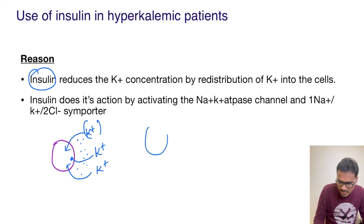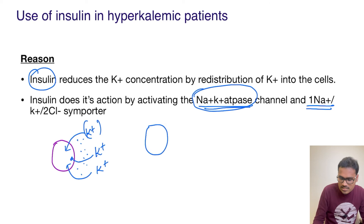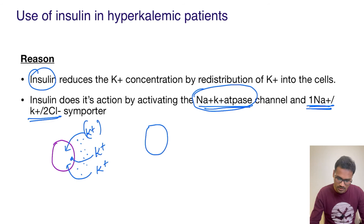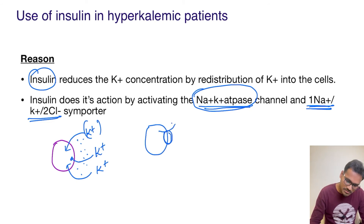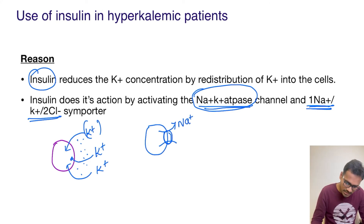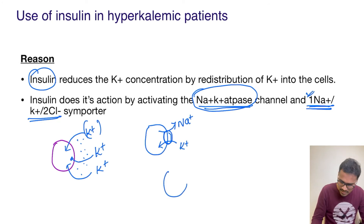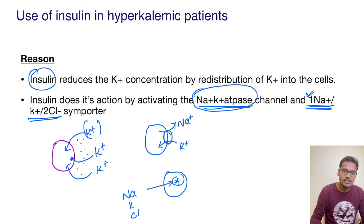The mechanism happening here is that insulin activates two important channels: the sodium-potassium ATPase channel, as well as the sodium-potassium-2-chloride (NKCC) symporter. The sodium-potassium ATPase channel works to throw sodium out and take potassium in. The NKCC symporter takes sodium, potassium, and chloride all inside the cell.